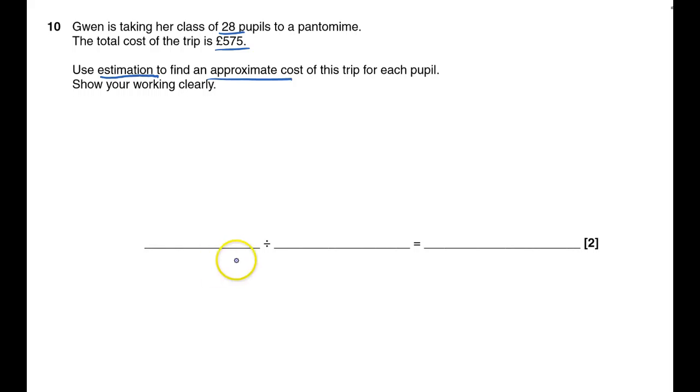What we'll do, we'll divide. That's pretty obvious we're going to do 575 and divide it by number of pupils, but if it's an estimation I need to round 575, so I'm going to do 600 divided by, I'm not going to divide by 28, I'm going to divide by 30.